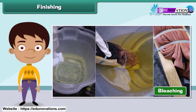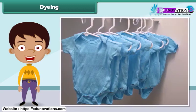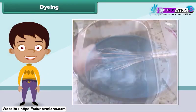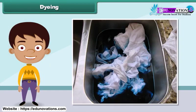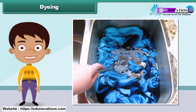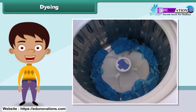Dyeing a fabric means giving a new color to the fabric. To dye a fabric, first a solution of dye and salt in warm water is prepared. Next, the fabric is dipped in the solution. Then the fabric is removed from the solution after an hour and washed. Finally, the fabric is dried.